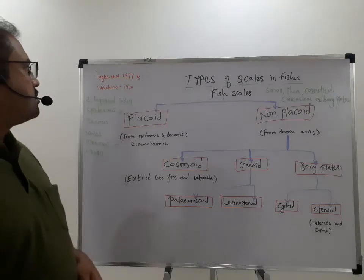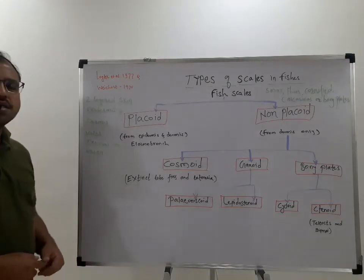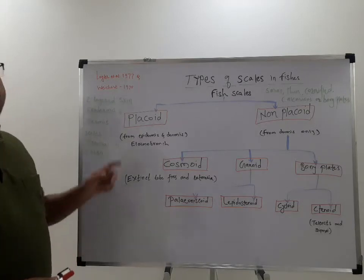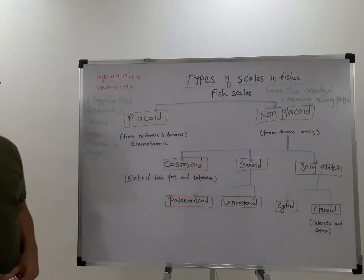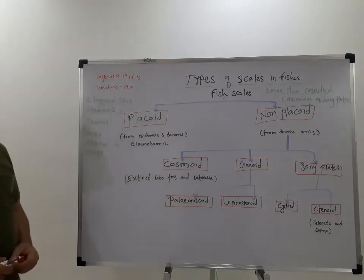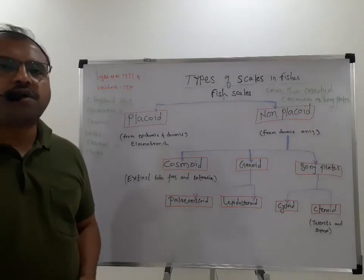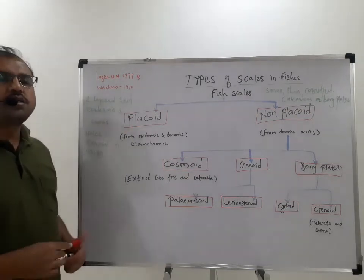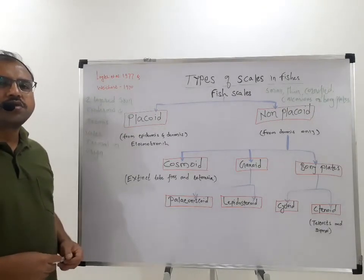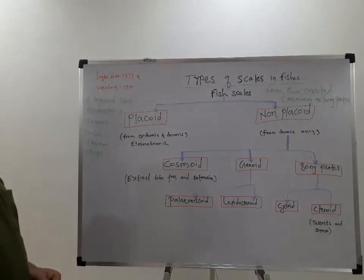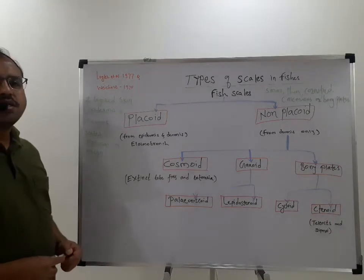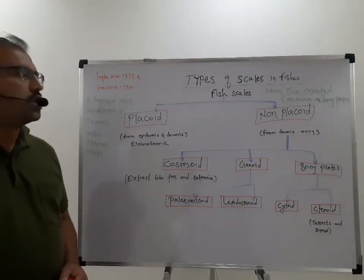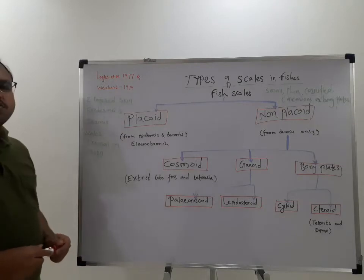These scales are classified by Lagler and Wichert in 1977 and 1970. According to them, various types of scales in fishes are classified. Today we will see the different kinds of scales present in fishes, which form the protective covering over the skin.